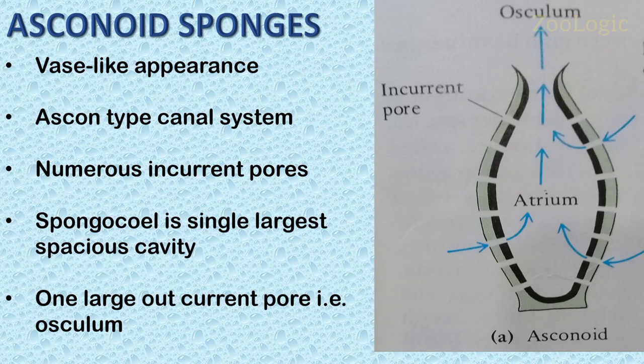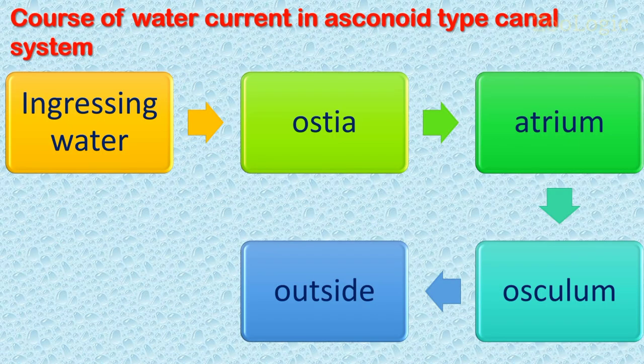This structure imposes limitations on size, because if the volume of the spongocoel increases, the flagellated surface area does not increase proportionally. Consequently, a large asconoid sponge would contain more water than its choanocytes could efficiently move. The water ingresses through ostia into the atrium, that is the spongocoel, and it exits the sponge through the osculum in the ascon-type canal system.